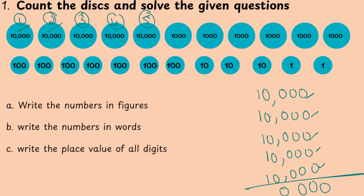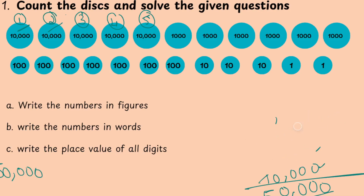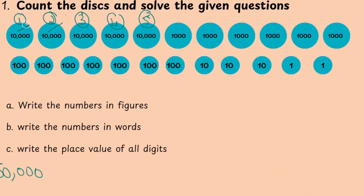If you add 1 plus 1 is 2, 2 plus 1 is 3, 3 plus 1 is 4, 4 plus 1 is 5. So the answer is 50,000. How many 10,000 are there? 50,000. This addition working is only for your understanding — if you know to count directly you can write it down.